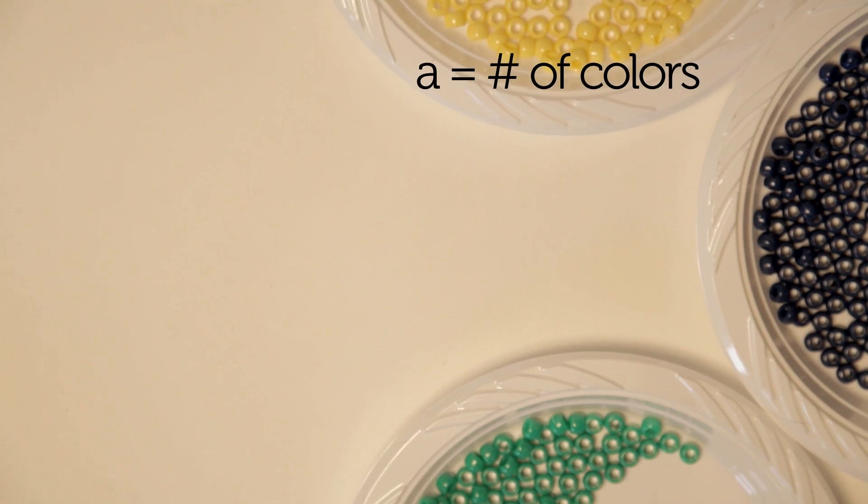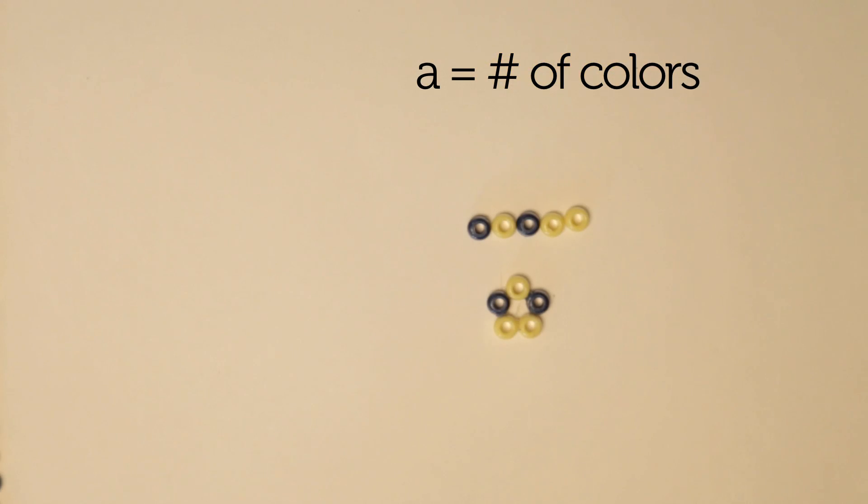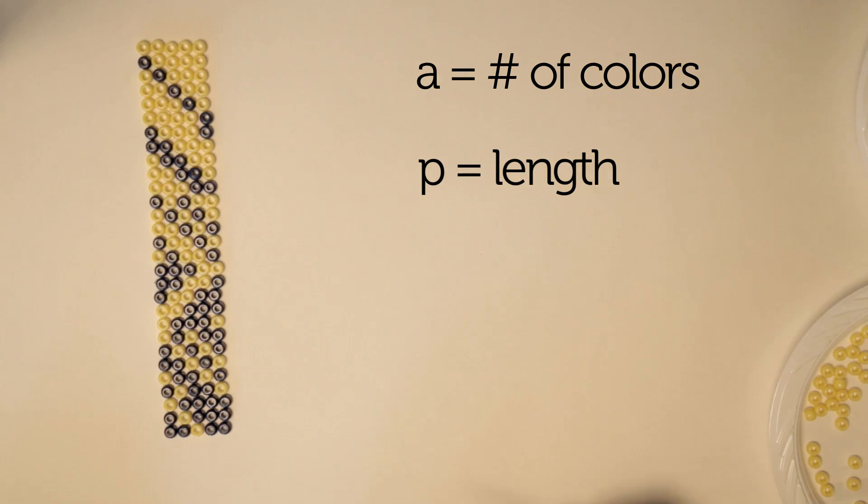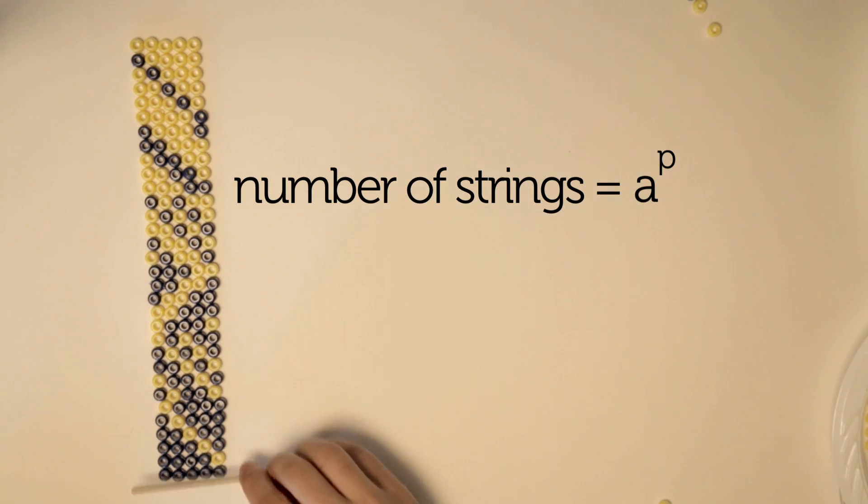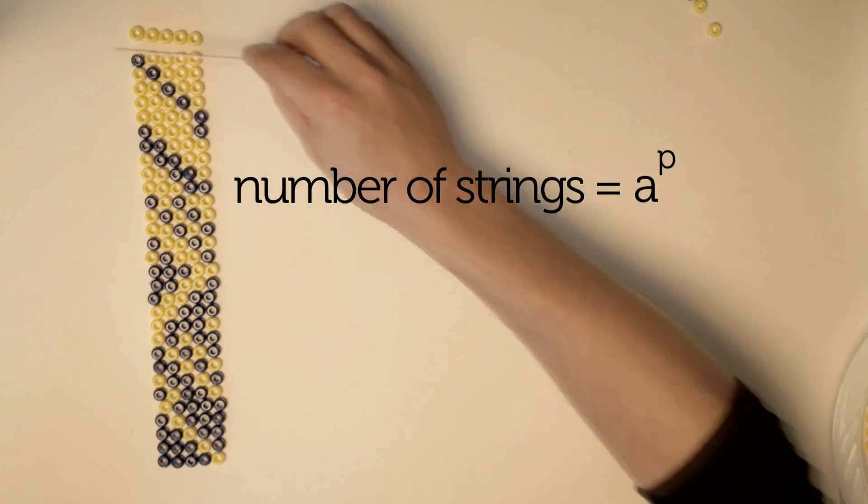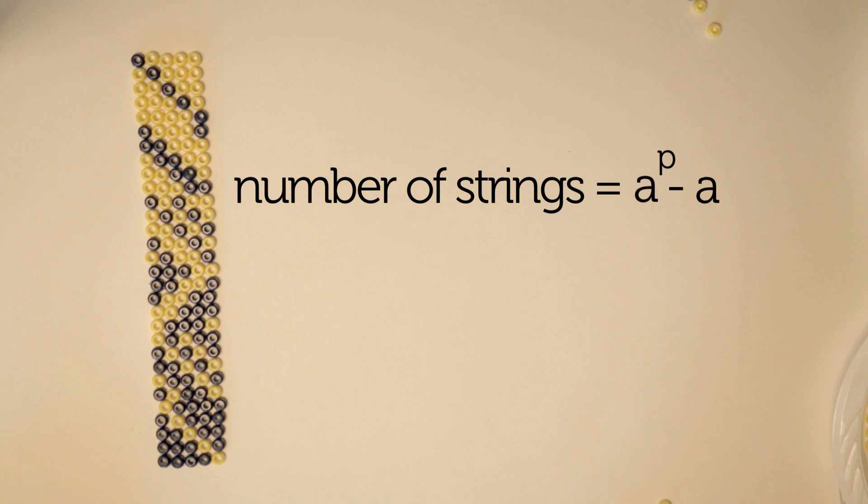Given A colors and strings of length P, which are prime, the number of possible strings is A times A times A P times, or A to the power of P. And when he removed the monocolored strings, he subtracts exactly A strings, since there are one for each color. This leaves him with A to the power of P minus A strings.